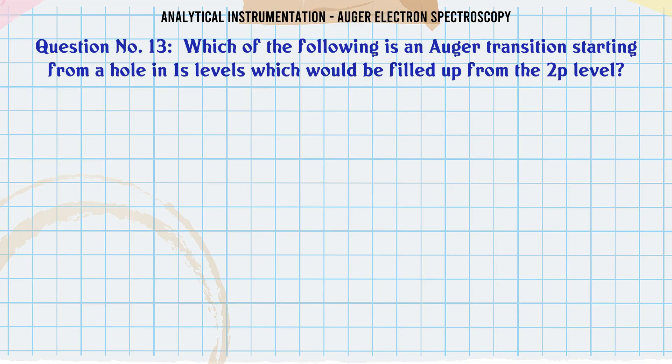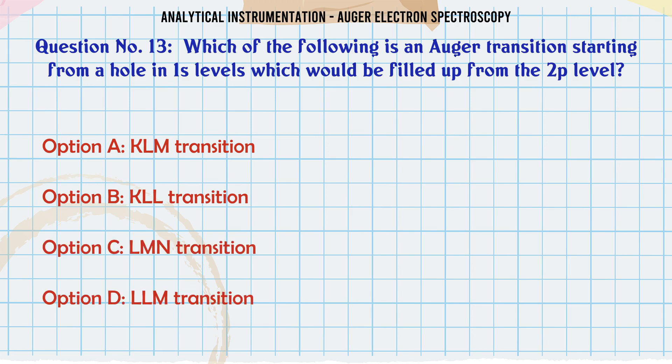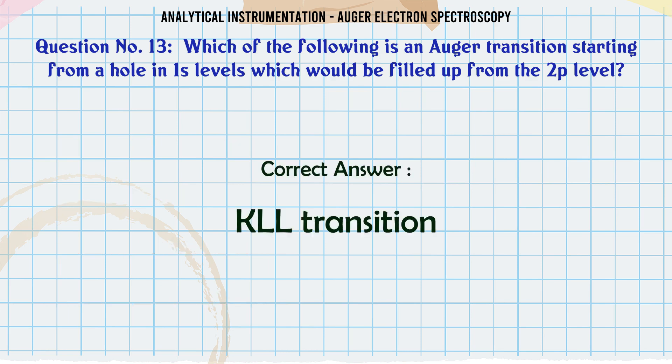Which of the following is an Auger transition starting from a hole in 1S levels which would be filled up from the 2P level? A. KLM transition. B. KLL transition. C. LMN transition. D. LLM transition. The correct answer is KLL transition.